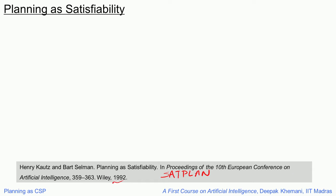This was done around 1992, and in 1998 or so, they won the international planning competition. This is a competition in which you have to write your domain-independent planner, and then they give you domains and problems. Your planner should run on that, and they compare which one finds better plans, which one solves bigger problems and things like that.